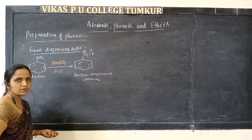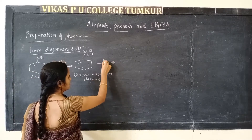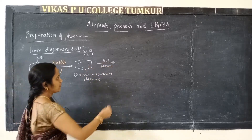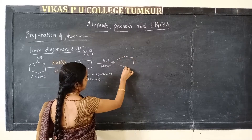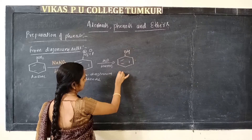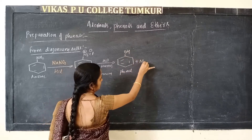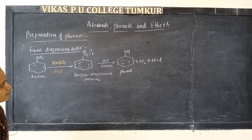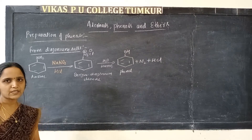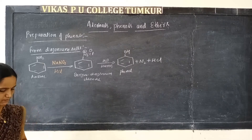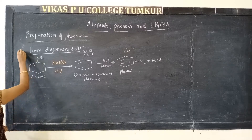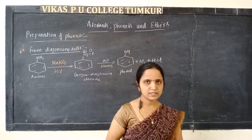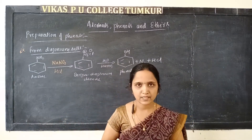The benzene diazonium chloride solution is warmed with water, and at that time we get phenol, along with the liberation of nitrogen and hydrochloric acid. This is the preparation of phenol using diazonium salts — one of the important reactions you should remember for examinations.